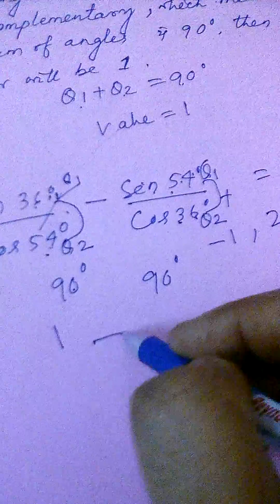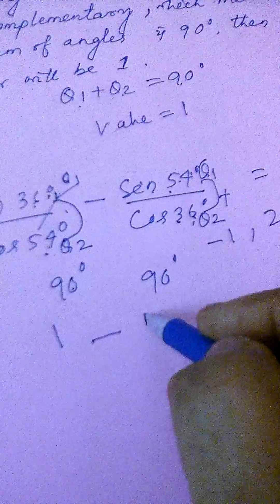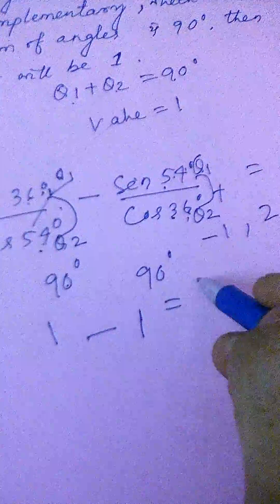Simple. And this one is also 1. So 1 minus 1 is equal to 0.